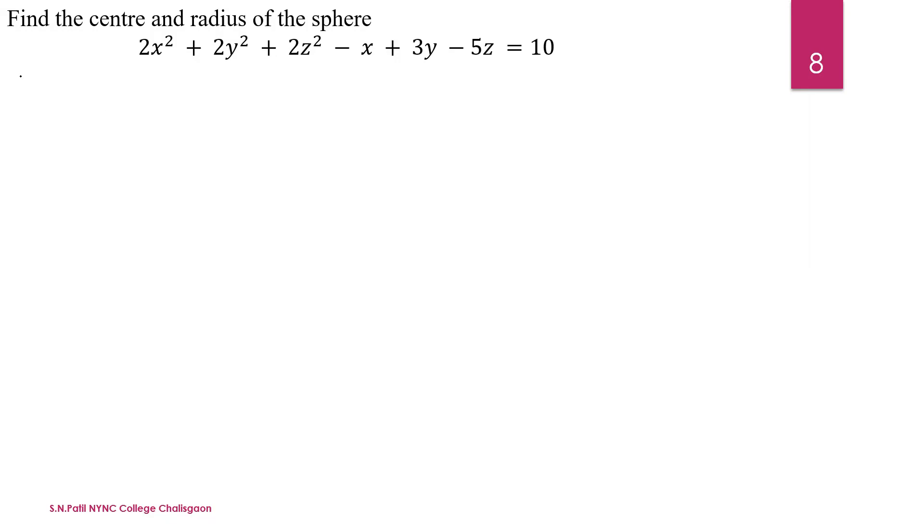First of all, we write the general form of the sphere. We know the general form of the sphere is x² + y² + z² + 2ux + 2vy + 2wz + d = 0. Say equation number 1.